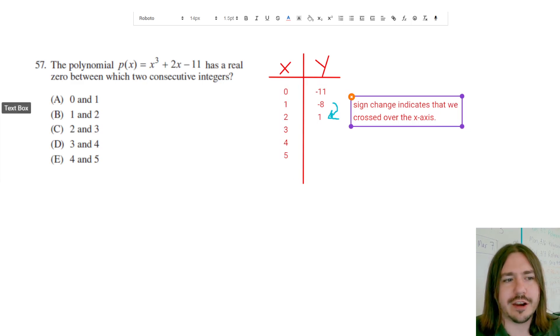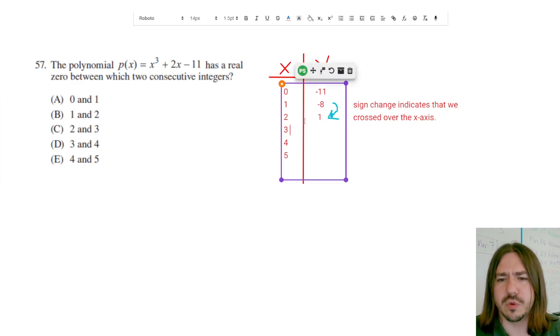So it's likely that our answer here is going to be B, but let's just keep this going to make sure that I didn't make any typos or something else kind of funny happens. So I'm going to type in 3, 3 cubed plus 2 times 3 minus 11, and I'm getting 22.